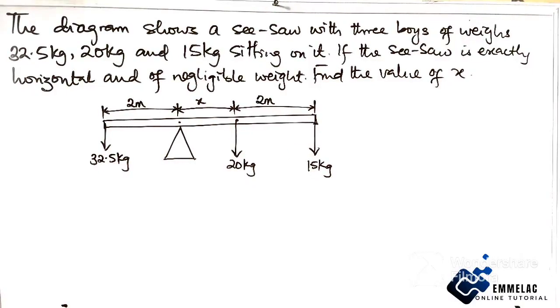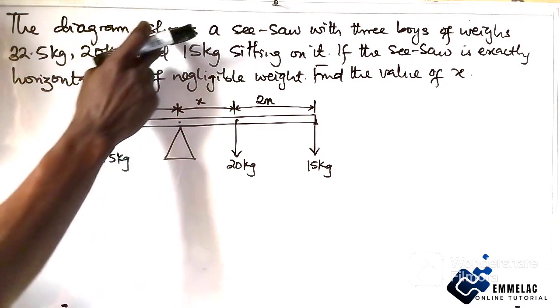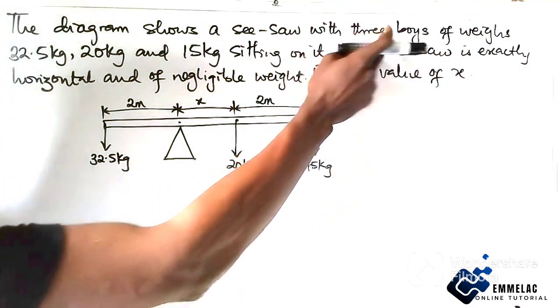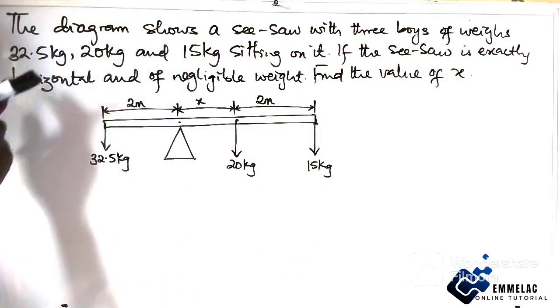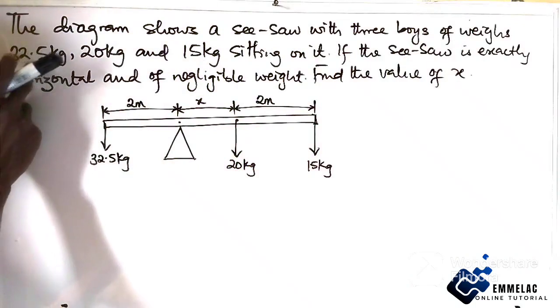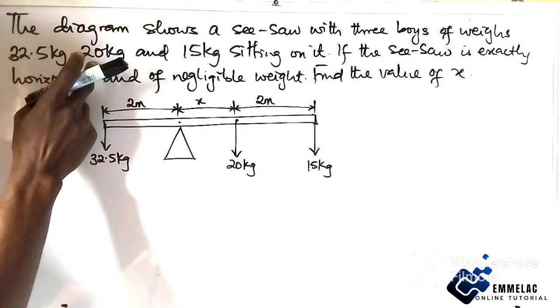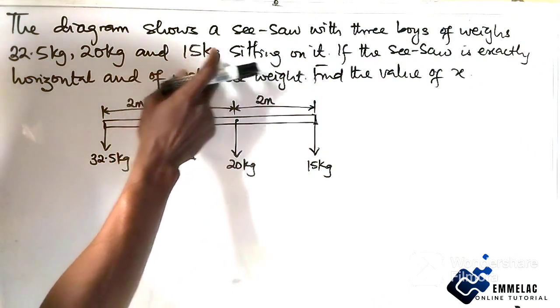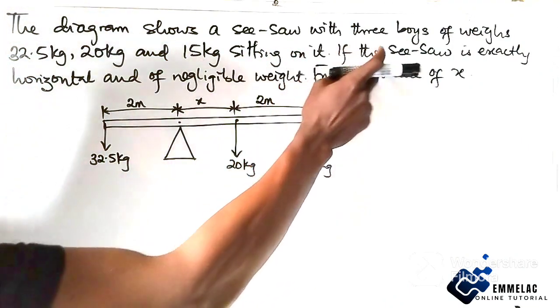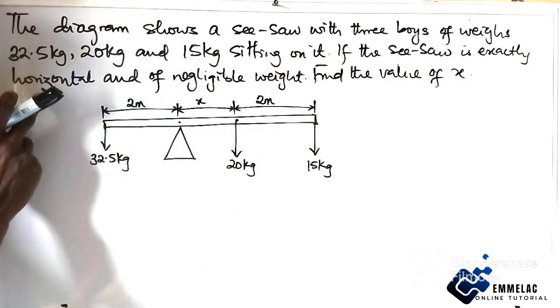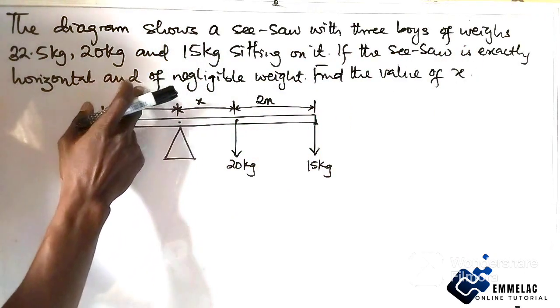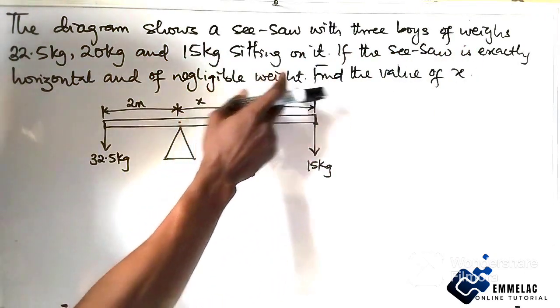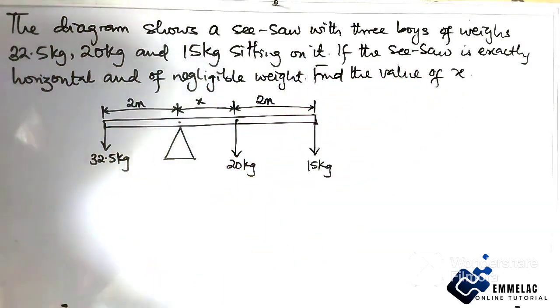Welcome to Milak online tutorial. Before us is this question in physics that says the diagram shows a seesaw with three boys of weight 32.5 kilogram, 20 kilogram, and 15 kilogram sitting on it. Now if the seesaw is exactly horizontal and of negligible weight, find the value of x.